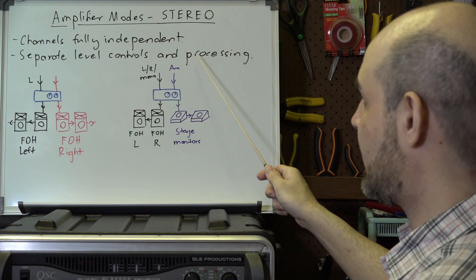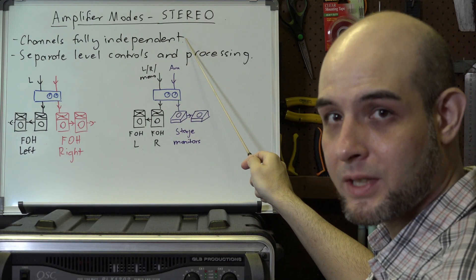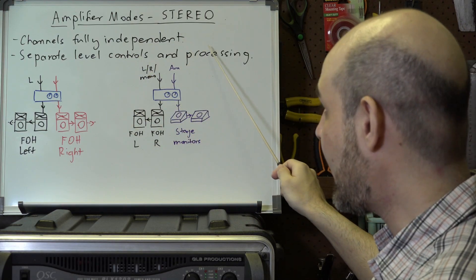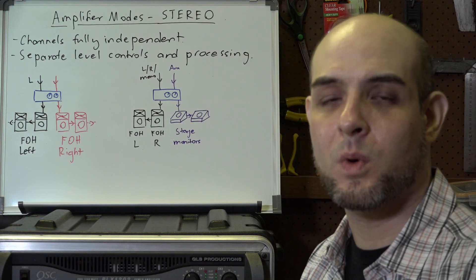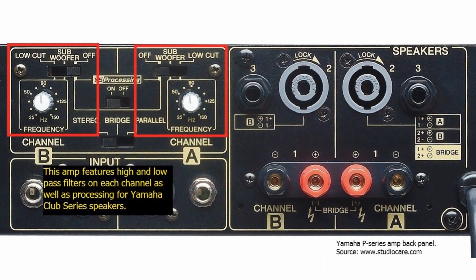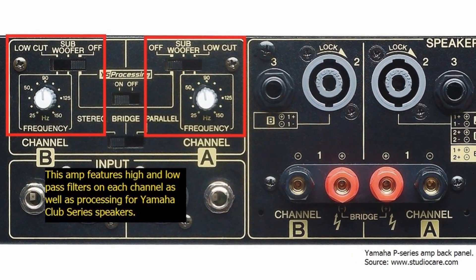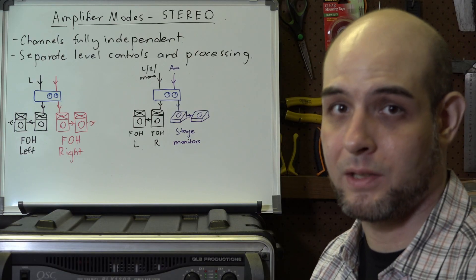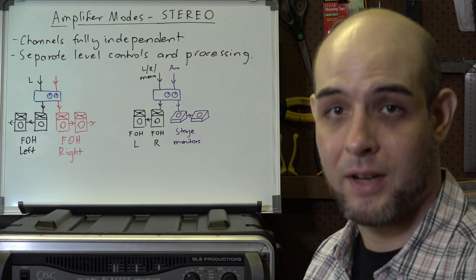If you look at my diagram here, you can see that in this mode the two channels are fully independent, meaning each one has its own level control and its own processing. When we say processing we're referring to things like high or low pass filters. Some amplifiers have built-in compression or limiting. The settings on channel one do not affect the settings on channel two and vice versa.